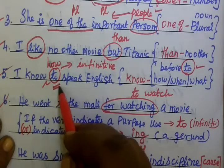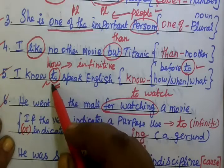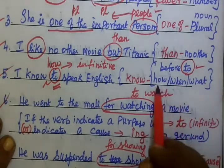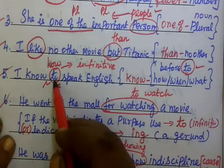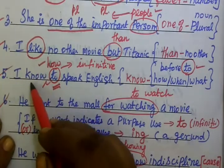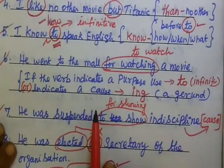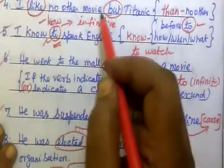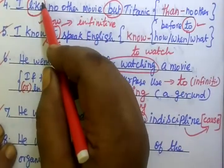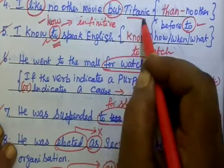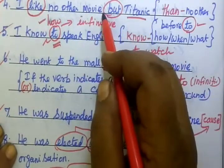The infinitive form uses how, when, or what before it. So: I know how to speak English. And for the next example: I like no other movie than Titanic. Here 'but' should be replaced with 'than'.